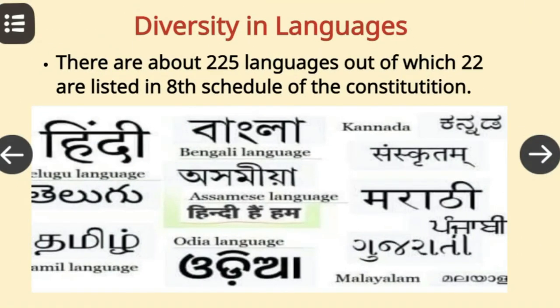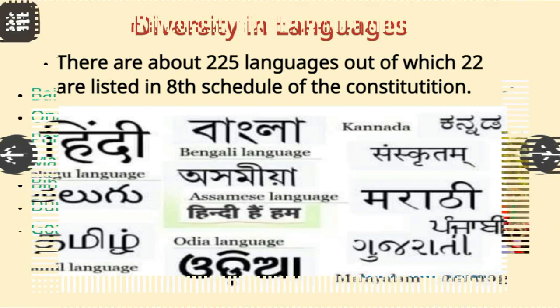Another distinguished feature of our country is languages. Different languages are spoken in different parts of our country. There are about 225 languages, out of which 22 are listed in the 8th schedule of the constitution.